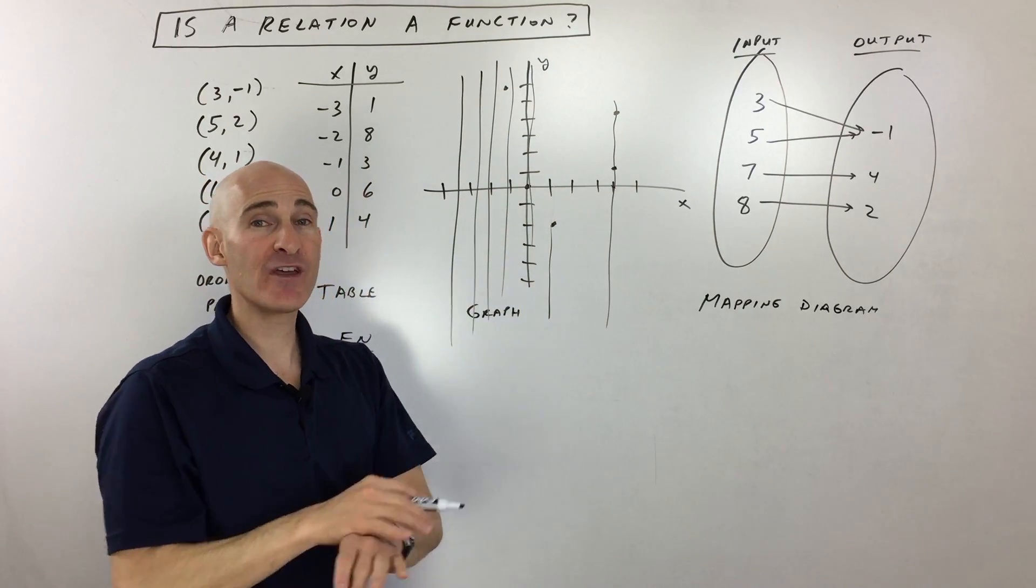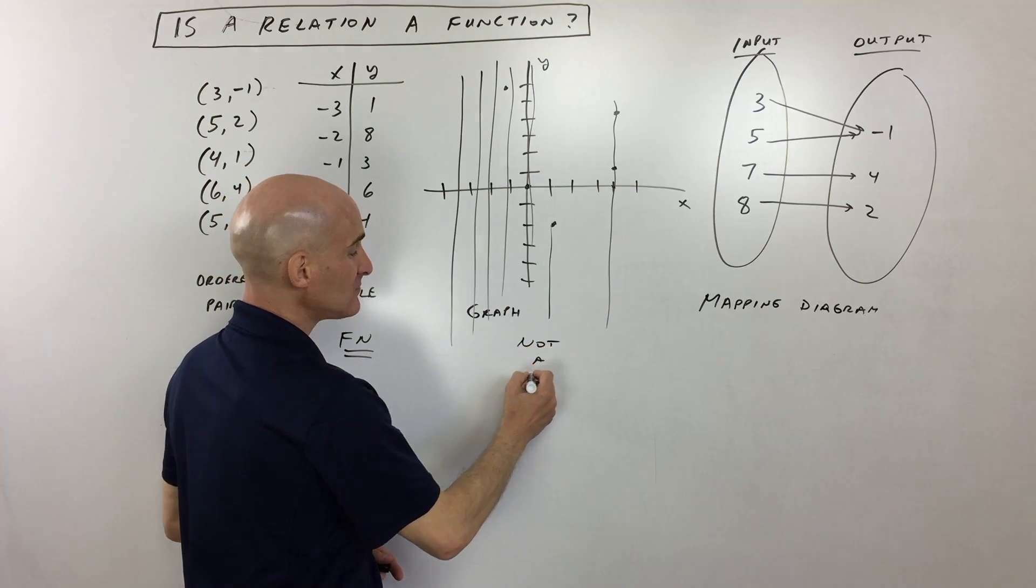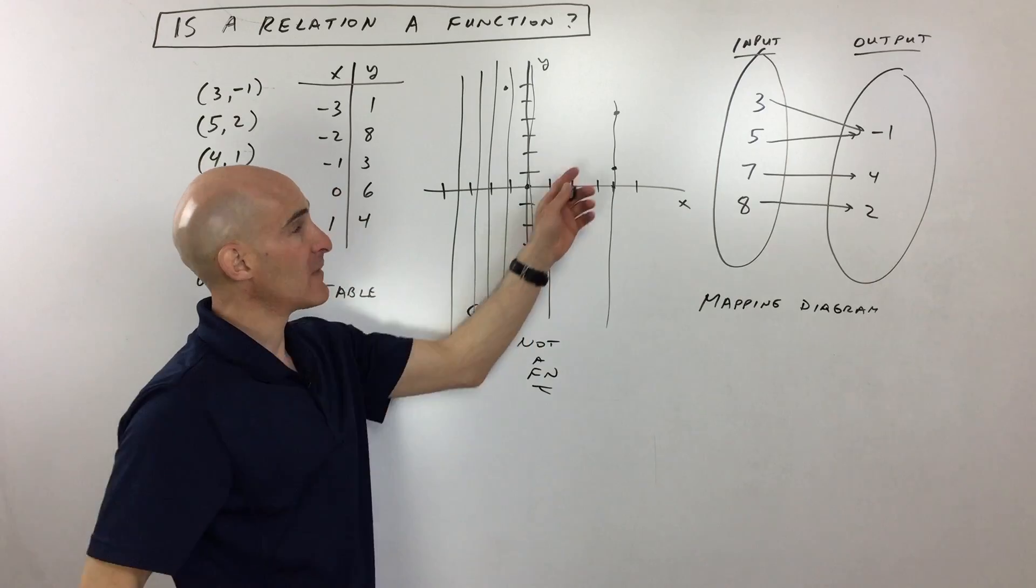So as it stands now, it fails that vertical line test, which means that it's not a function.